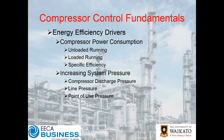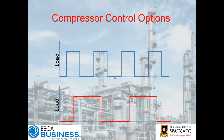We can compensate and increase pressures, but that's still not going to stop units from loading and unloading. Here's an example: if you take the load-unload scenario with a relatively small receiver or no receiver, the compressor is just pumping up the pressure in the line then hitting your high pressure set point and coming off.